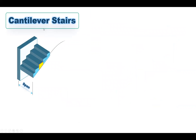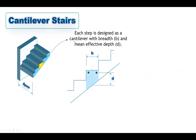Let's start with the cantilever stairs. Each step is designed as a cantilever with width B and mean effective depth equal to D. When we design a step, we take the cross-section dimension of the step. The section has a width equal to B, which is the width of the step, and the effective depth is measured from the top steel — which is the main steel in this case — to the center line of the step, giving the average height. This is the main effective depth.